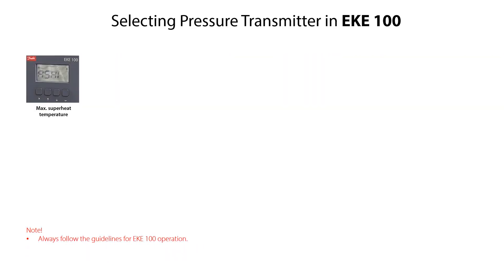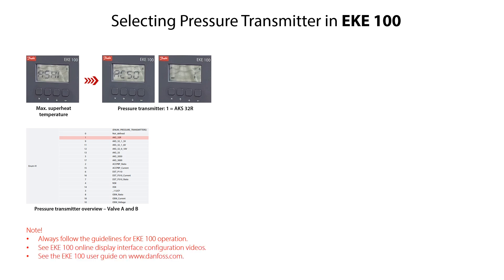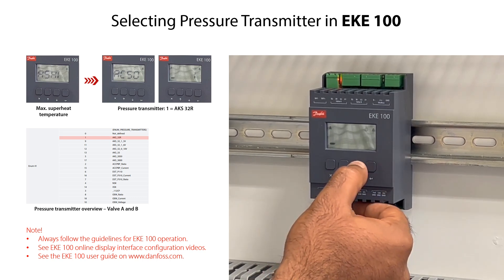The next step is to select the suitable valve A pressure transmitter. In this example we select an AKS32R. From the ASHI mode, press the arrow down key to access the available pressure transmitters for valve A, specified as AC50. Press the enter key to access the available pressure transmitters. Press the arrow up or down keys to find and select the needed pressure transmitter. Select 1 corresponding to AKS32R. Press enter to confirm the value and return to AC50 mode.